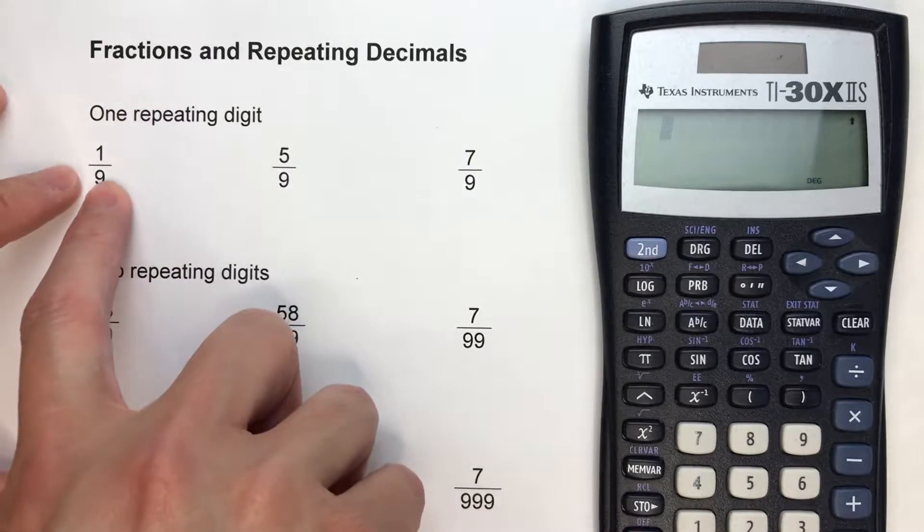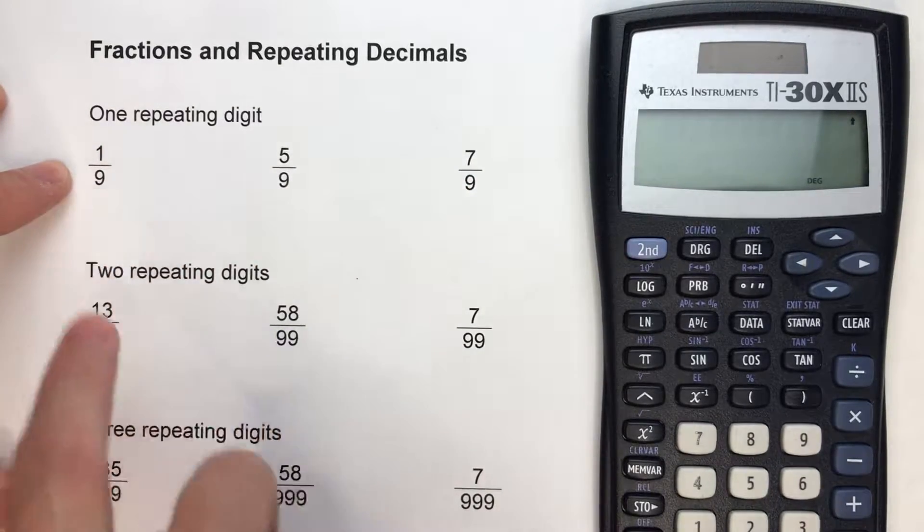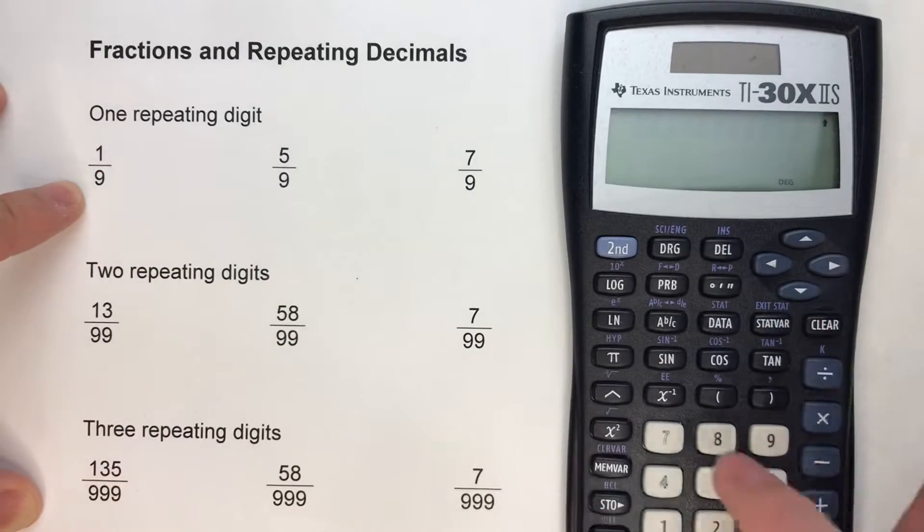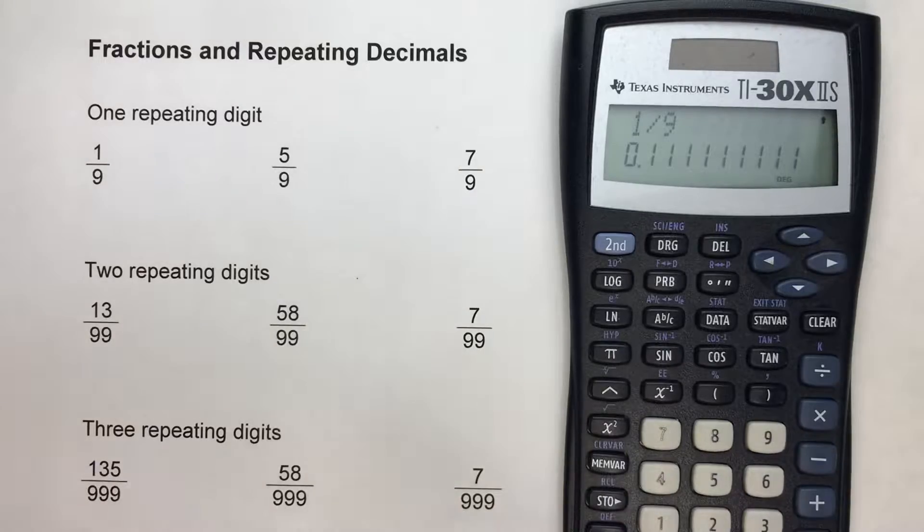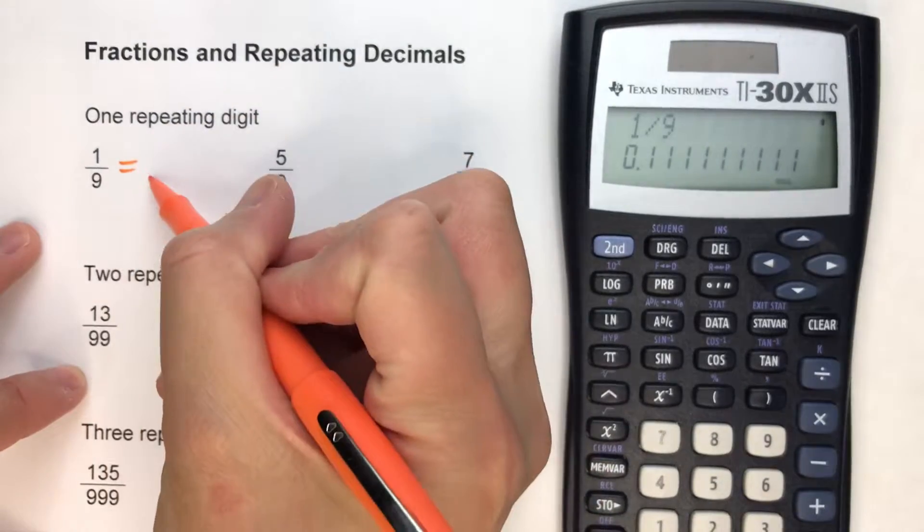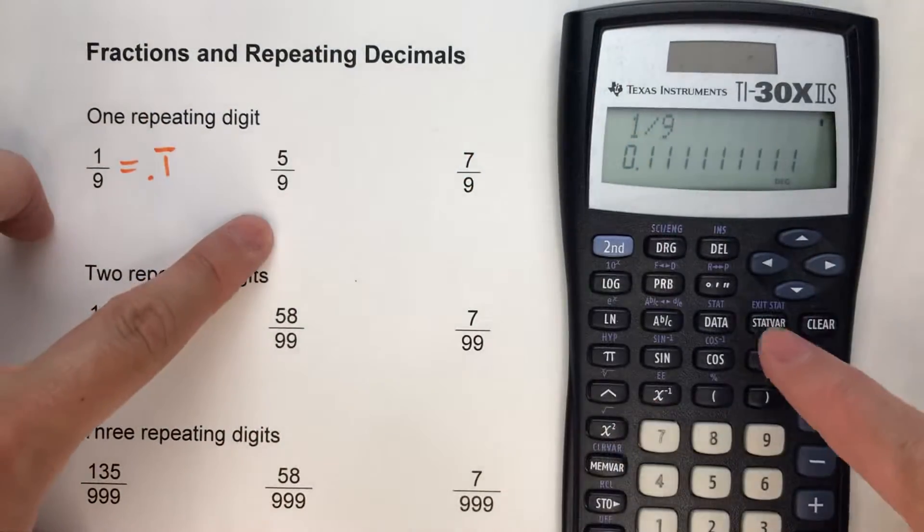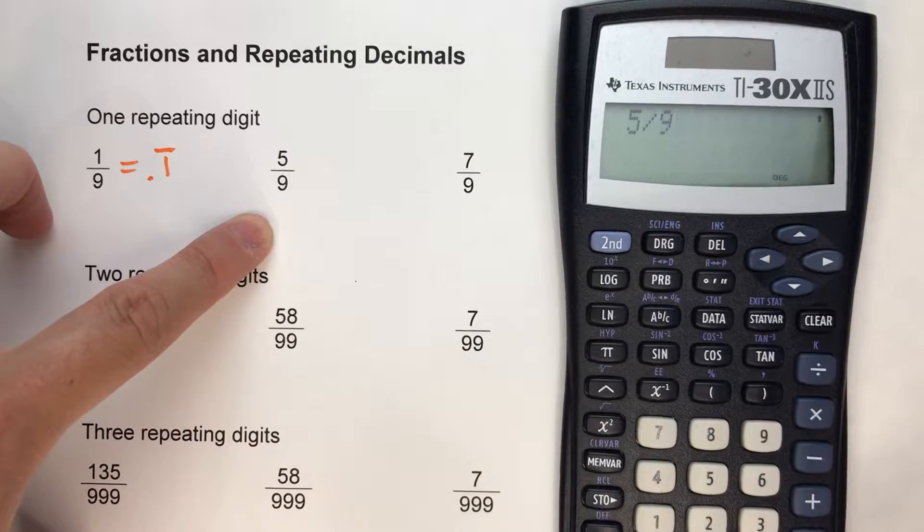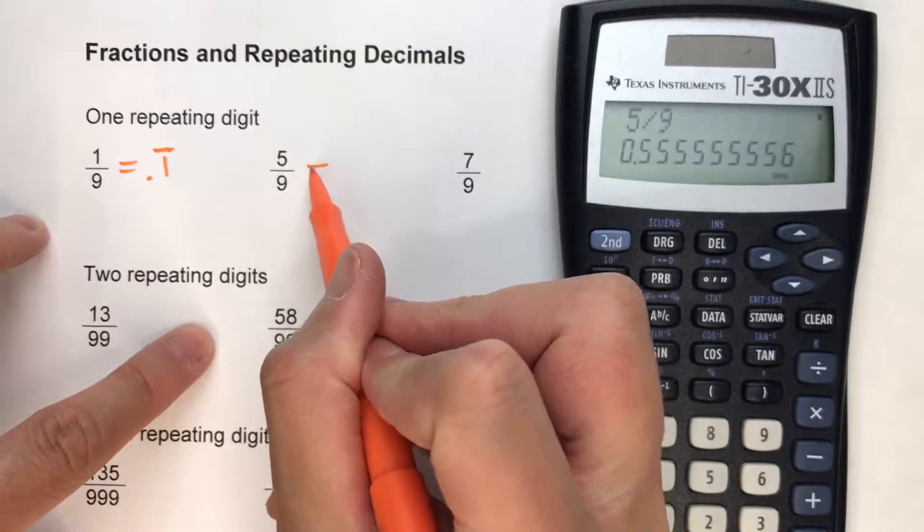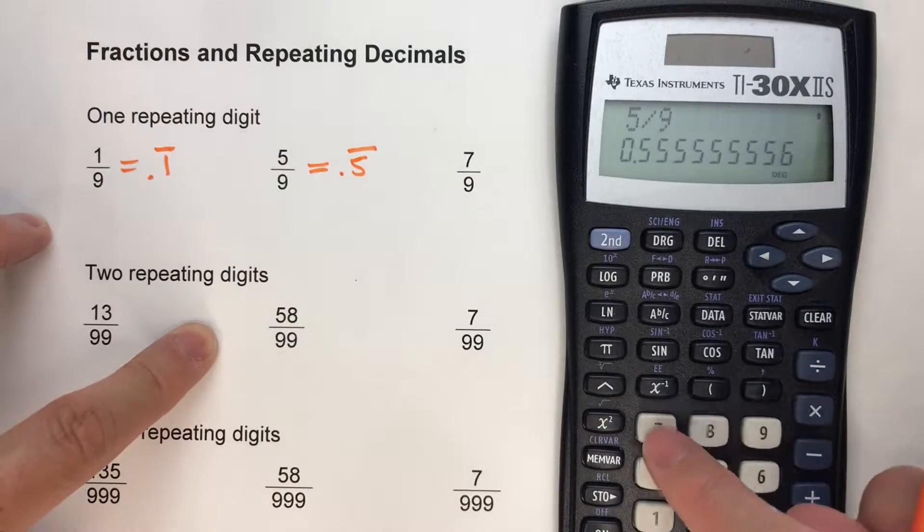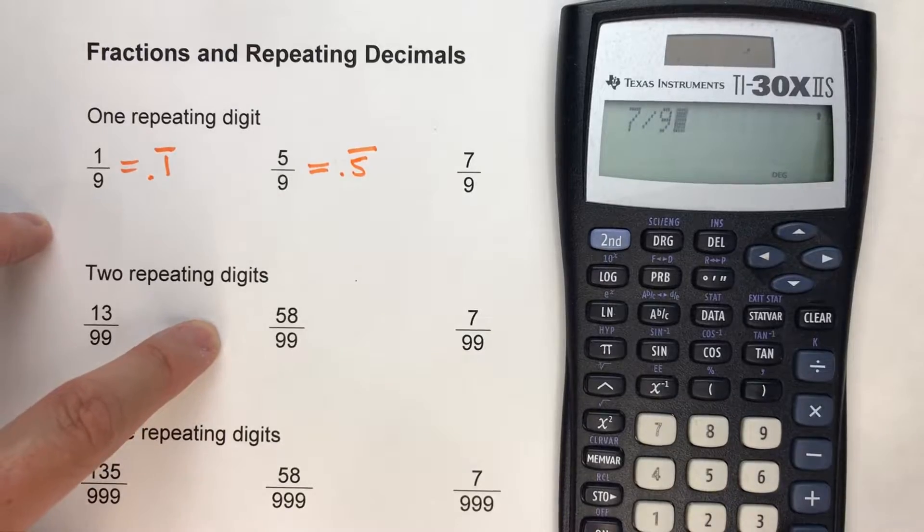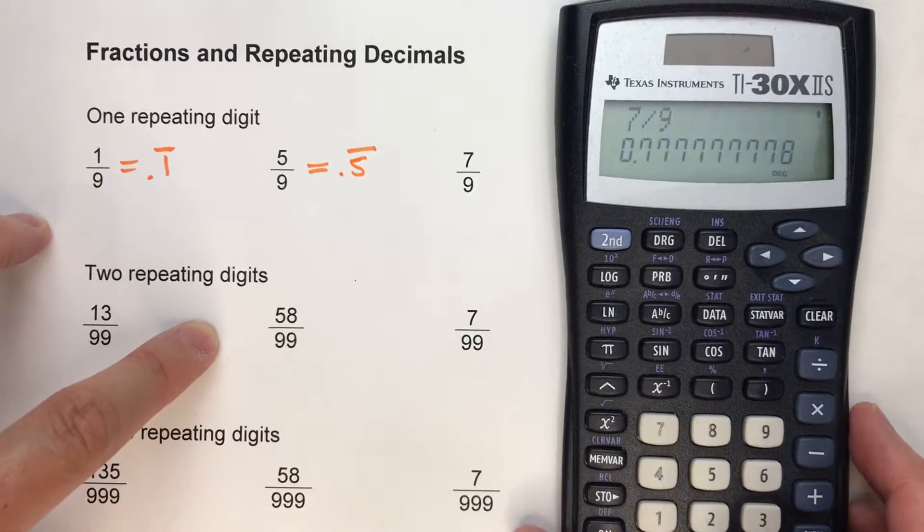I'll give you an example. When we work with fractions that have 9 in the denominator, take a look what happens. 1/9, if I use my calculator, notice that's 0.1 repeating. And 5/9? That's 0.5 repeating. There we go. And 7/9, what do you think it is? Of course, 0.7 repeating.